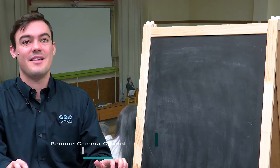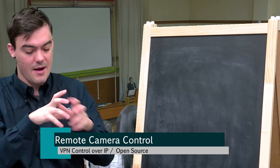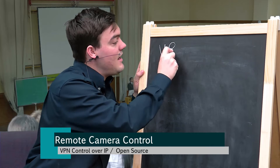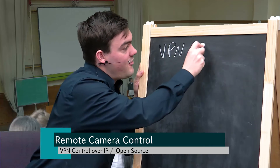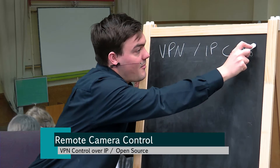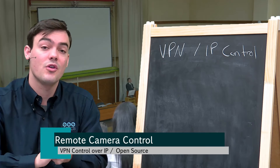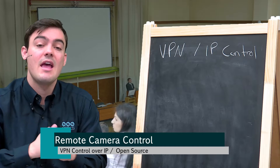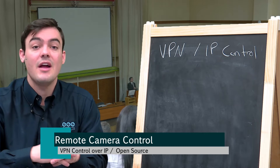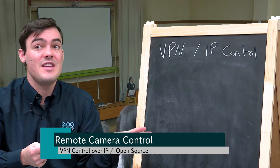Hello everybody, thank you for tuning in. This is our last video in our remote camera control series, and today we are talking about VPN and IP control. Our PTZ Optics cameras can be controlled over IP. In the last video we showed how to use our Rokosoft Windows control software, which allows you to have an external IP address for the camera and control it from anywhere in the world. Today we're going to talk about doing a VPN.